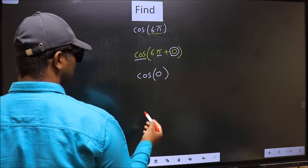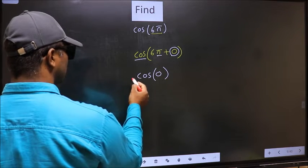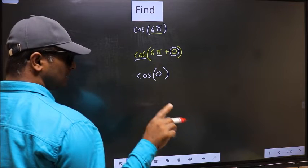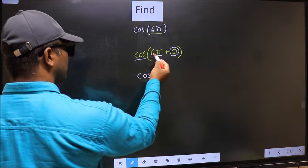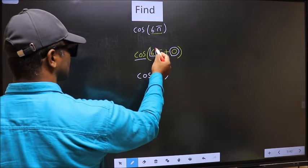Now the question is, will we get plus or minus here? To decide that, you should look at the number before π, which is 6.